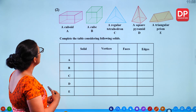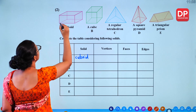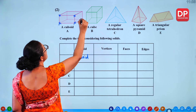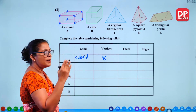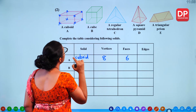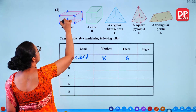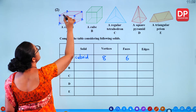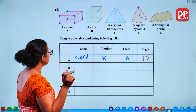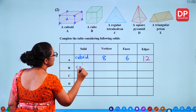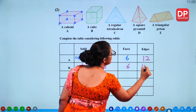Take the first one — a cuboid. Counting gives 8 vertices, 6 faces (same as a cube), and 12 edges. So same as a cube: 8 vertices, 6 faces, 12 edges. Shape B is a cube — we did that already — so you get the same numbers as the cuboid.